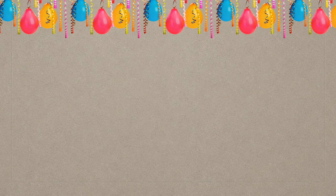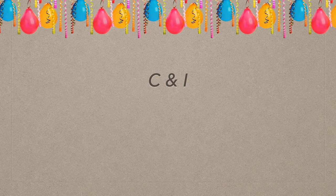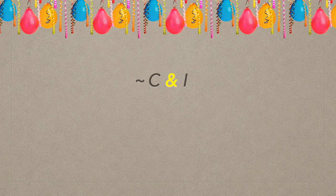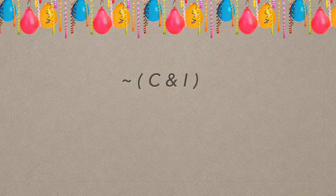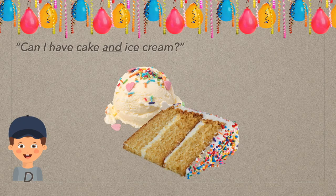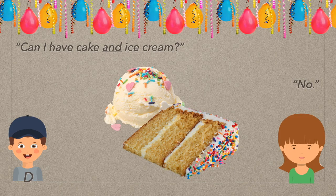David asked for cake and ice cream — let's start there. Writing C and I says you can have cake and you can have ice cream. But mom said David cannot have cake and ice cream. So do we just put the negation in front? That would say you cannot have cake, but you can have ice cream — that's not what mom said. We forgot to add parentheses. Close both C and I in parentheses, then negate it. This says: here is something that is not true — you can have cake and ice cream. In other words, David asked for both and mom denied the request. So her answer was not both.